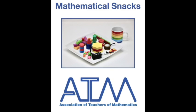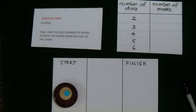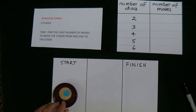This is a mathematical snack from the Association of Teachers of Mathematics. This is a puzzle called the Tower of Hanoi. There are three spaces on the piece of paper in front of me and I have a number of discs of different sizes. I have three here.